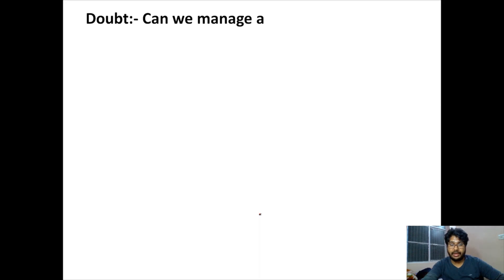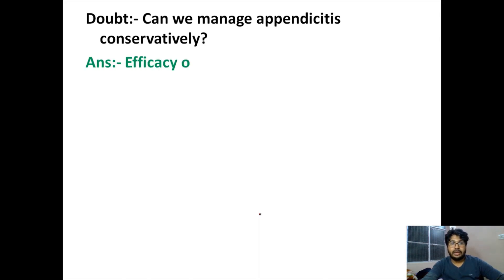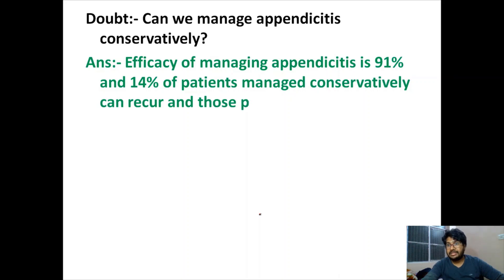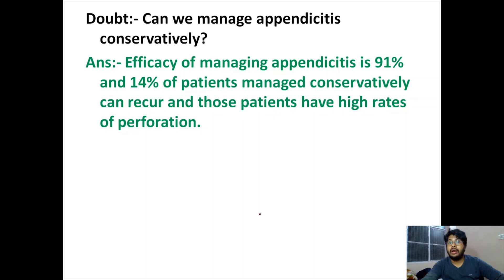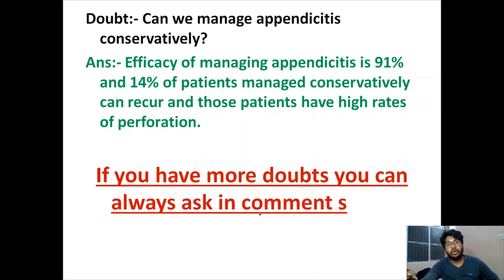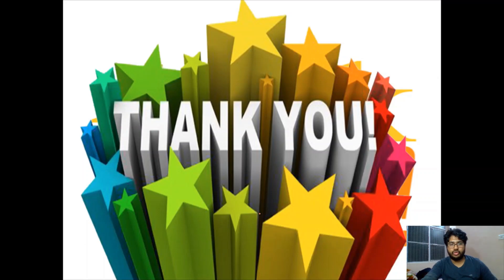Can appendicitis be managed conservatively? This is a tricky question. The efficacy of conservative management is 91%, but 14% of conservatively managed patients can recur, and those who recur have higher rates of perforation. So the recommendation is: if a patient has appendicitis, just operate. For further doubts, you can always ask in the comment section. Thank you so much.